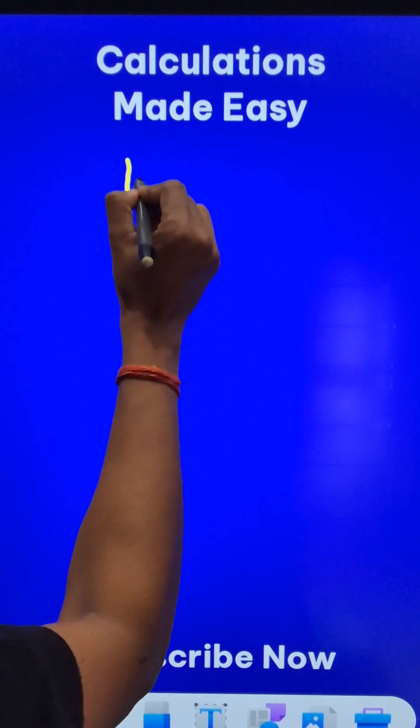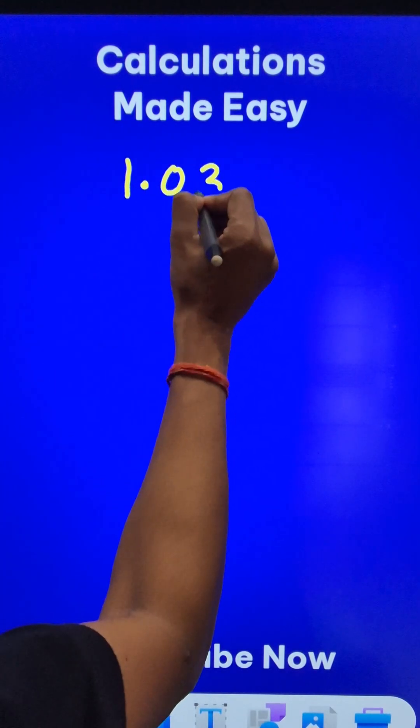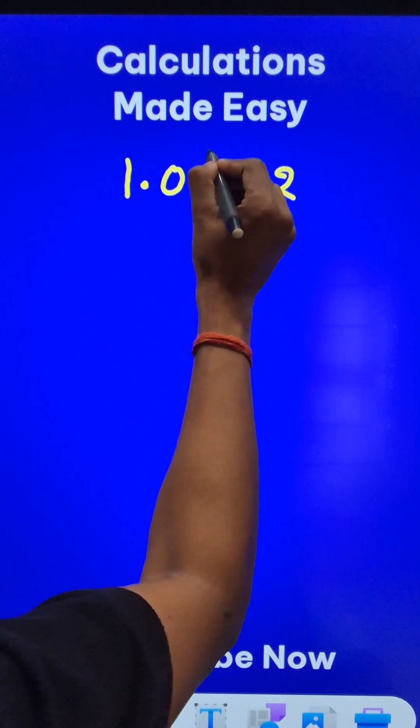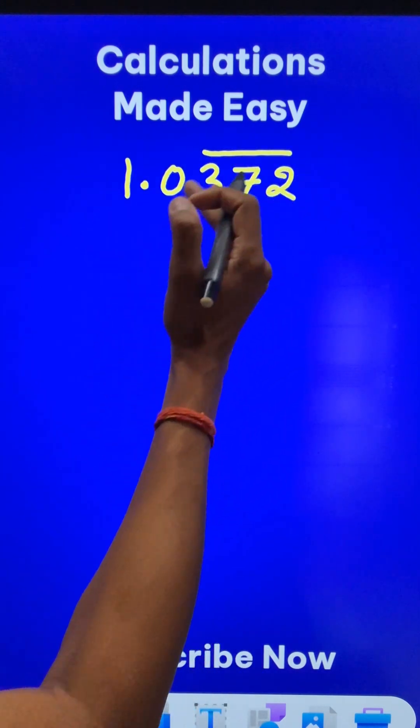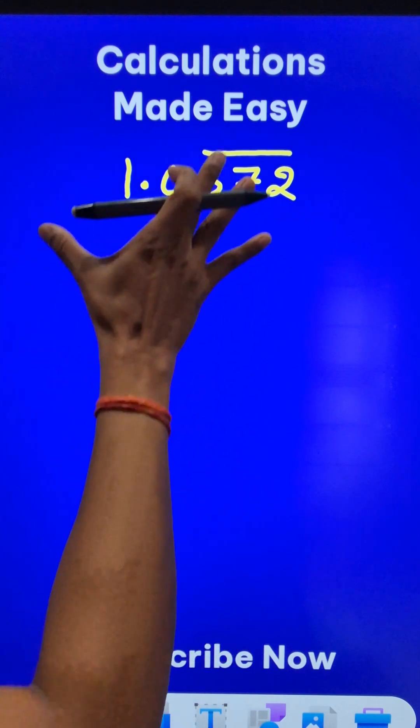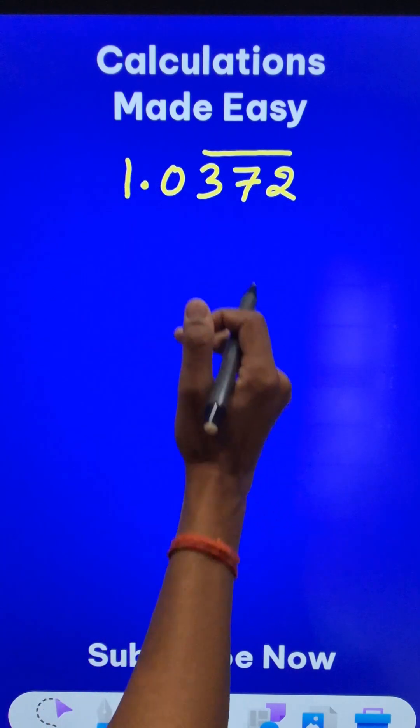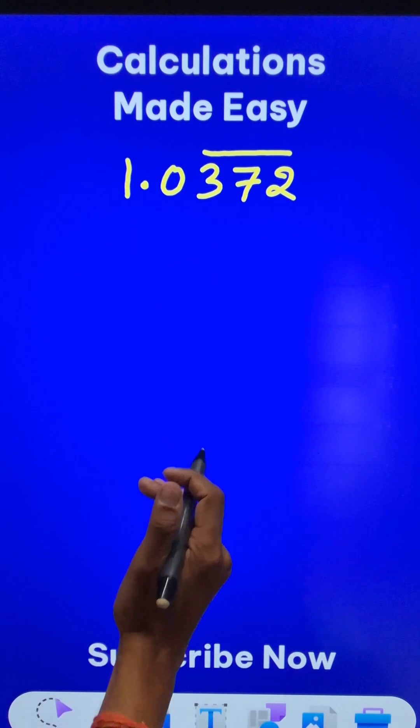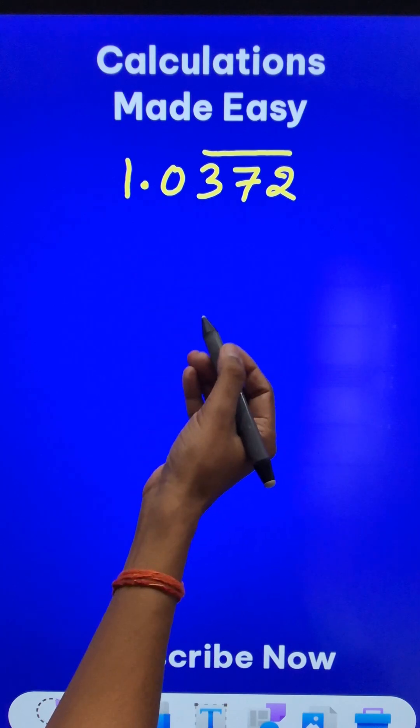How do you represent 1.0372 with a bar over 372 in the form of p upon q? I know you will be following the traditional method which will consume at least 2 to 3 minutes and 1 page of calculations. So let's do it in 15 seconds time.